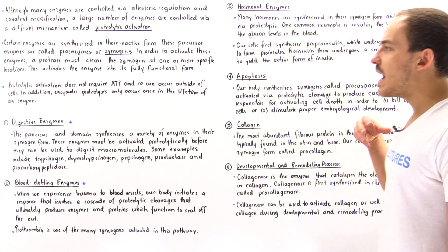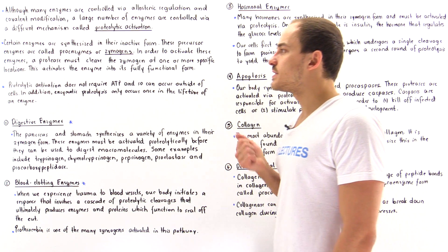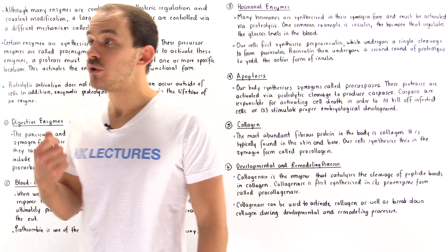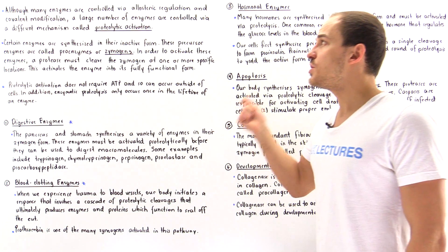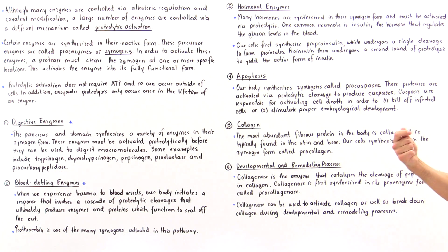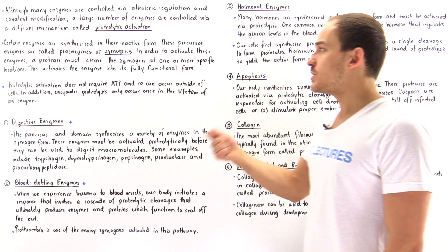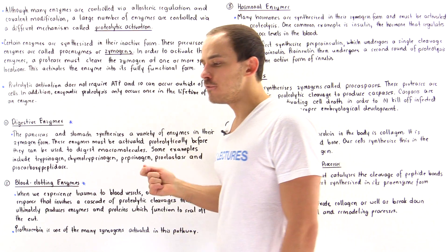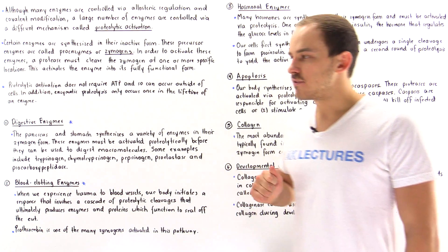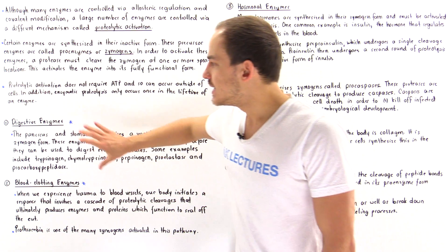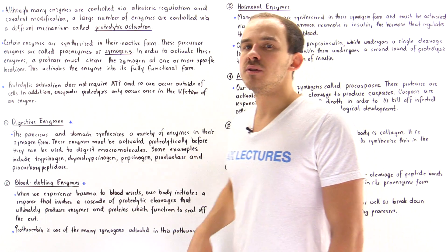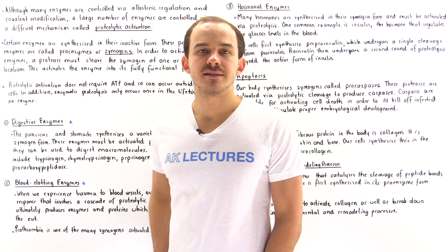So we have all these different types of enzymes found inside our body which depend on proteolytic activation to exist in their fully functional form. In the next several lectures we're going to focus on digestive enzymes as well as blood clotting enzymes.